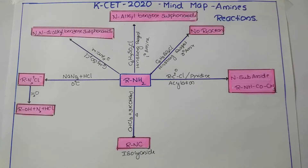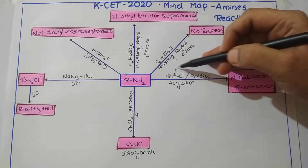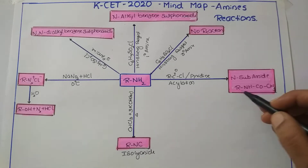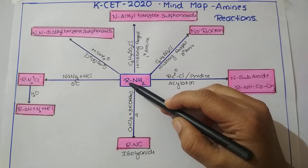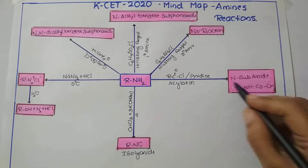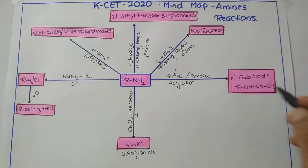The first reaction is acylation. When the amine is treated with acyl chloride in the presence of pyridine, the process is known as acylation and the product formed is an N-substituted amide. The R group may be any alkyl group — methyl, ethyl, propyl, and so on. The substituted group on the nitrogen is CH3CONH, which is the amide group.